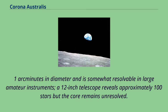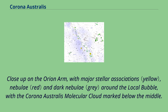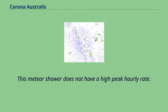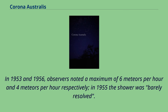A close-up on the Orion arm, with major stellar associations, nebulae and dark nebulae around the local bubble, with the Corona Australis Molecular Cloud marked below the middle. The Corona Australids are a meteor shower that takes place between 14 and 18 March each year, peaking around 16th of March. This meteor shower does not have a high peak hourly rate; in 1953 and 1956, observers noted a maximum of 6 meteors per hour and 4 meteors per hour respectively.